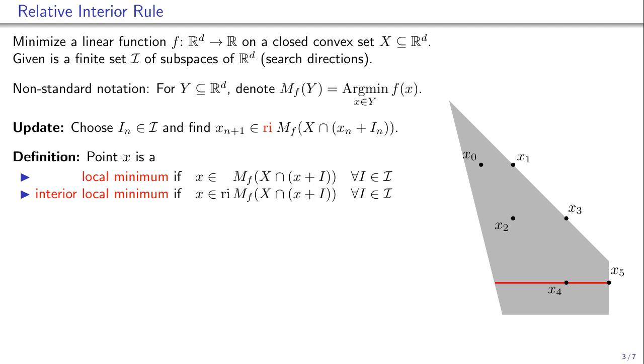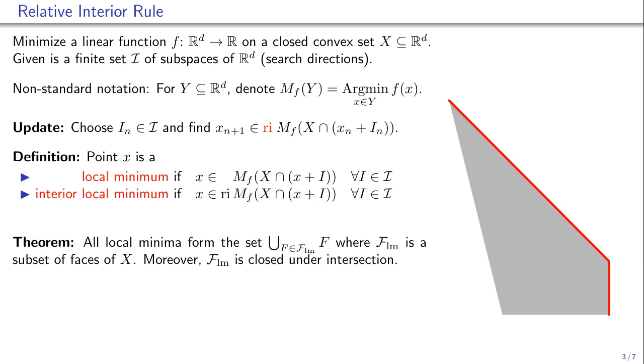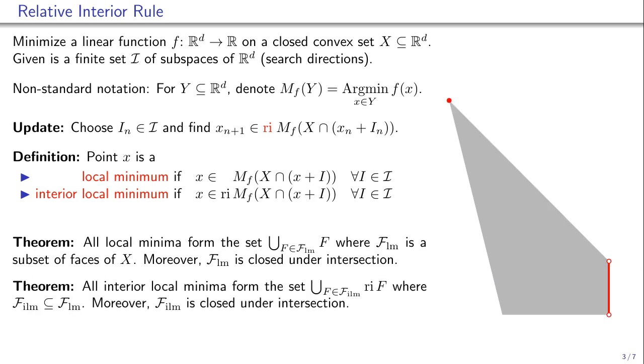All local minima form a subset of faces of the set X shown in red. The set of interior local minima consists of relative interiors of a smaller subset of faces of X. We call all points, including boundary ones of this subset of faces, pre-interior local minima.